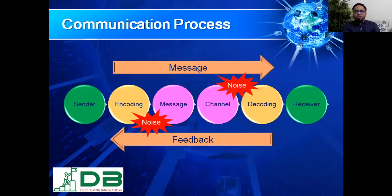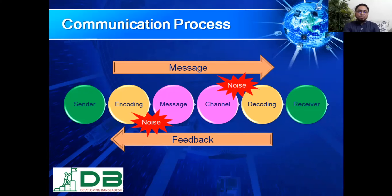Let's now look at the communication process. In the communication process, we find a sender — a communicator, an initiator. The sender encodes the message he would like to transmit to the receiver or audience. After encoding, he selects a channel — whether it could be face-to-face communication, over the phone, or by sending an email or writing a letter.